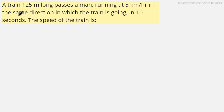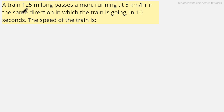The next question: a train 125 meters long passes a man running at 5 kilometers per hour in the same direction as the train in 10 seconds. We have to find the speed of the train. The length of the train is given, the time is given, and the man is running at 5 km/h in the same direction.